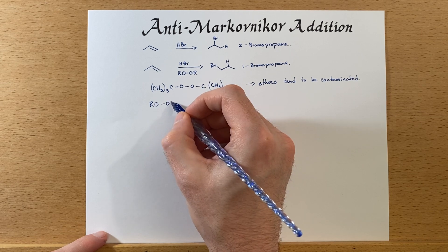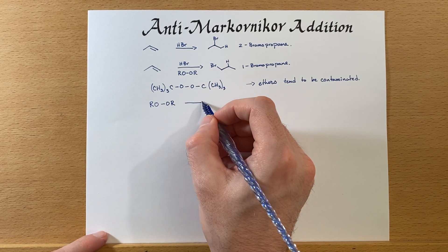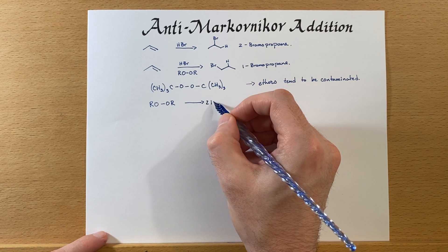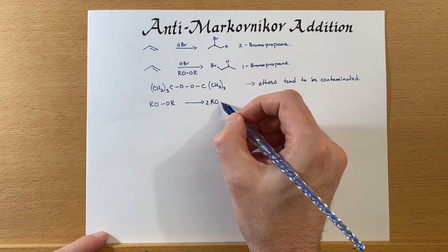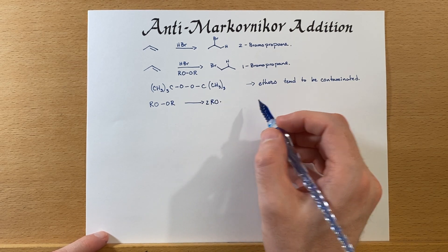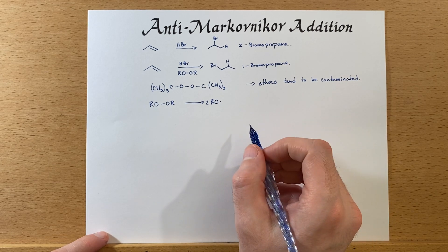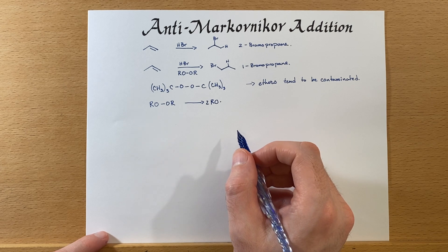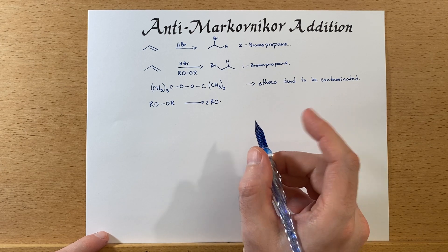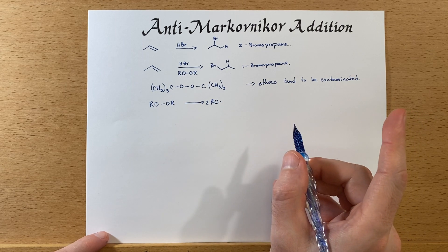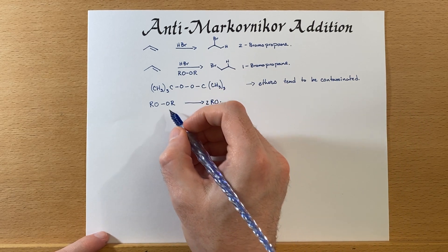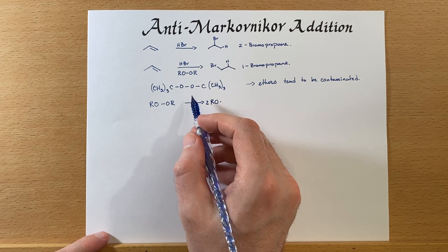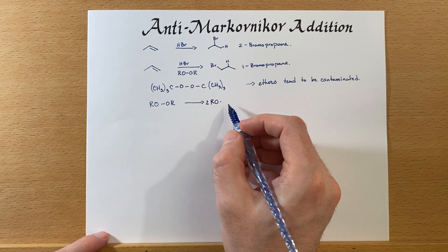There are also peroxide test strips you can use to check if peroxides have formed, which is useful for safety. However, if you're seeing anti-Markovnikov addition and you didn't want it, you may want to just not use an ether solvent to begin with. And if you do want anti-Markovnikov addition, I would suggest purposely adding in a peroxide just to be safe.